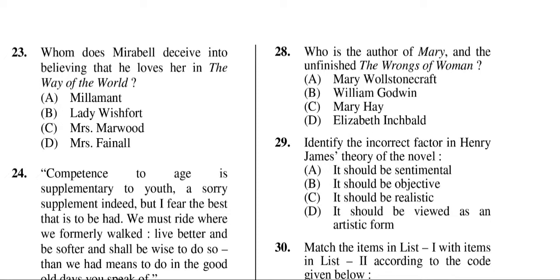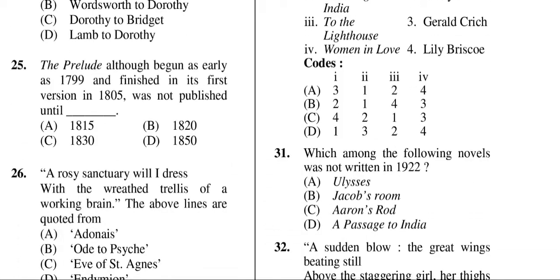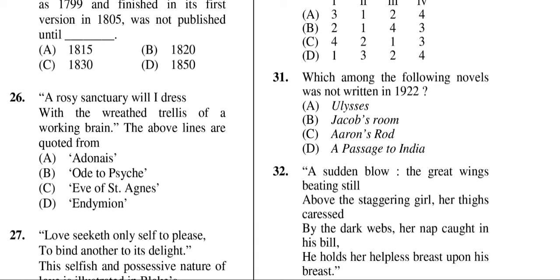Question twenty-nine: identify an incorrect factor in Henry James's theory of the novel. The correct answer is A — it should be 'sentimental.' Question twenty-five: The Prelude, although begun as early as 1799 and finished in its first version in 1805, was not published until D — that is 1850. Question twenty-six: 'A rosy sanctuary will I dress with the wreathed trellis of a working brain' — these lines are from B, Ode to Psyche.